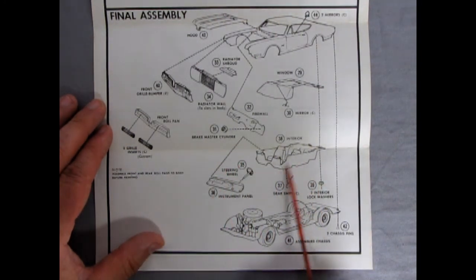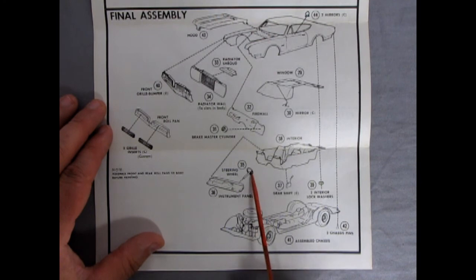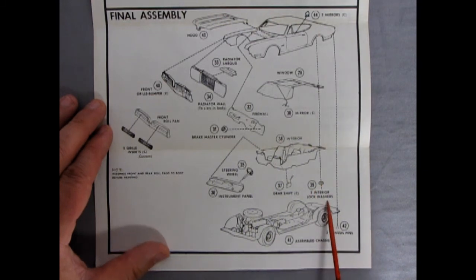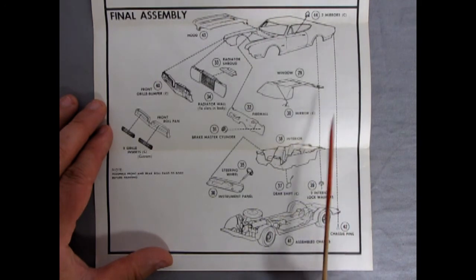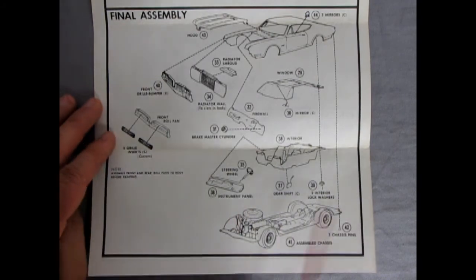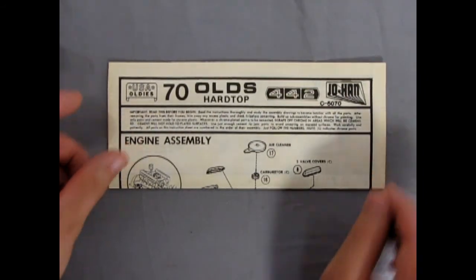The interior is a bucket but does have the bucket seats in there. The steering wheel and instrument panel all going in together. The gear shift plugs up through the bottom which is nice. There's two interior lock washers. Then our chassis goes together and chassis pins pop into the back. There's something interesting about this body which we'll see when we take a look at the plastic bits.